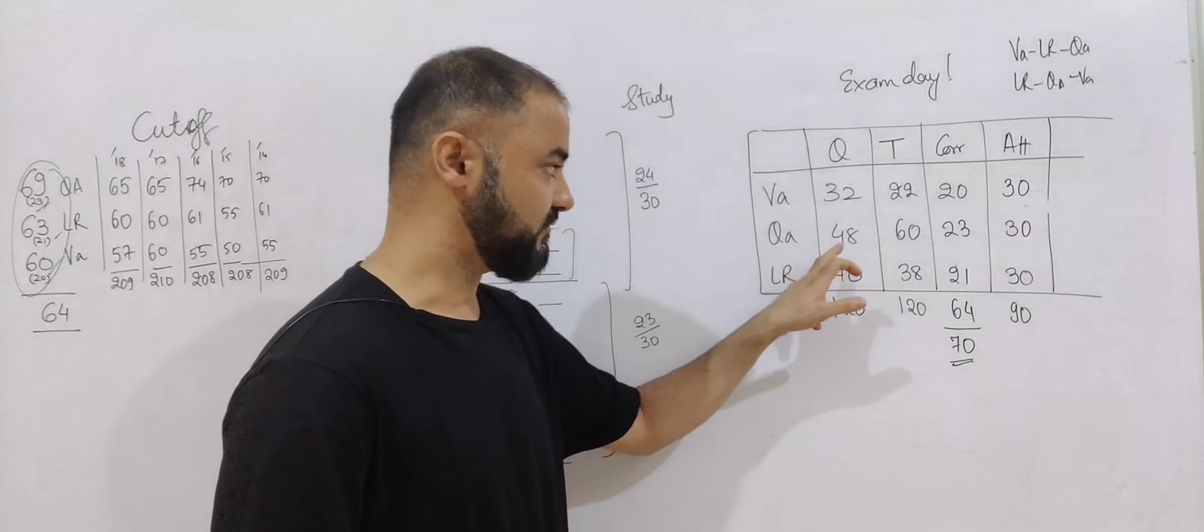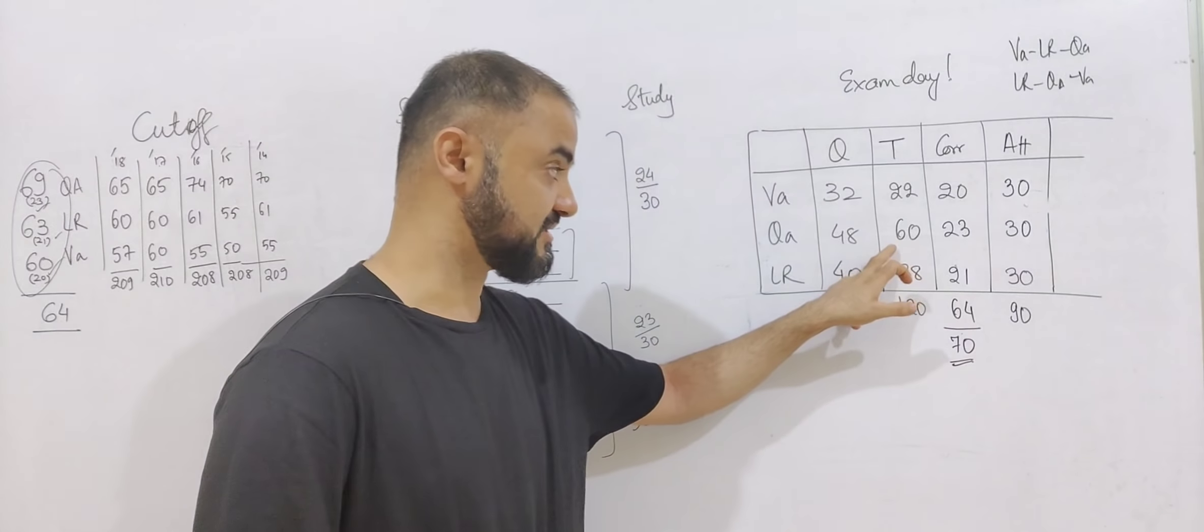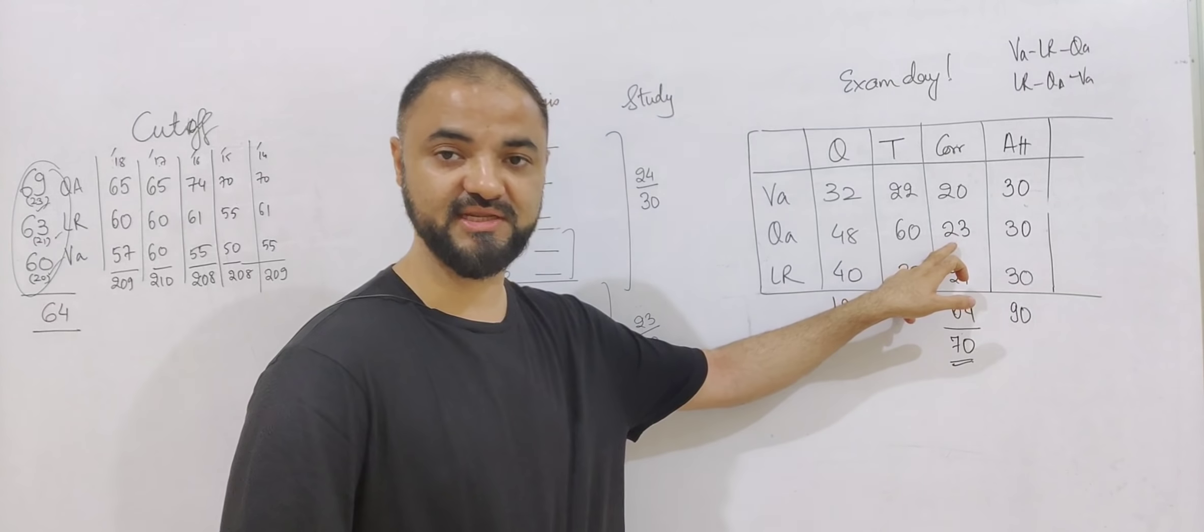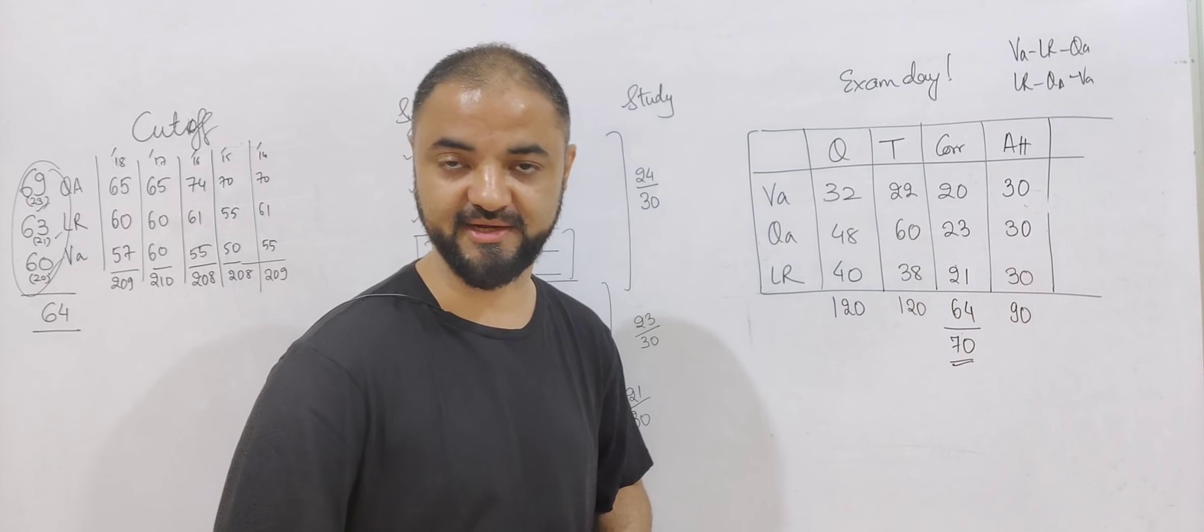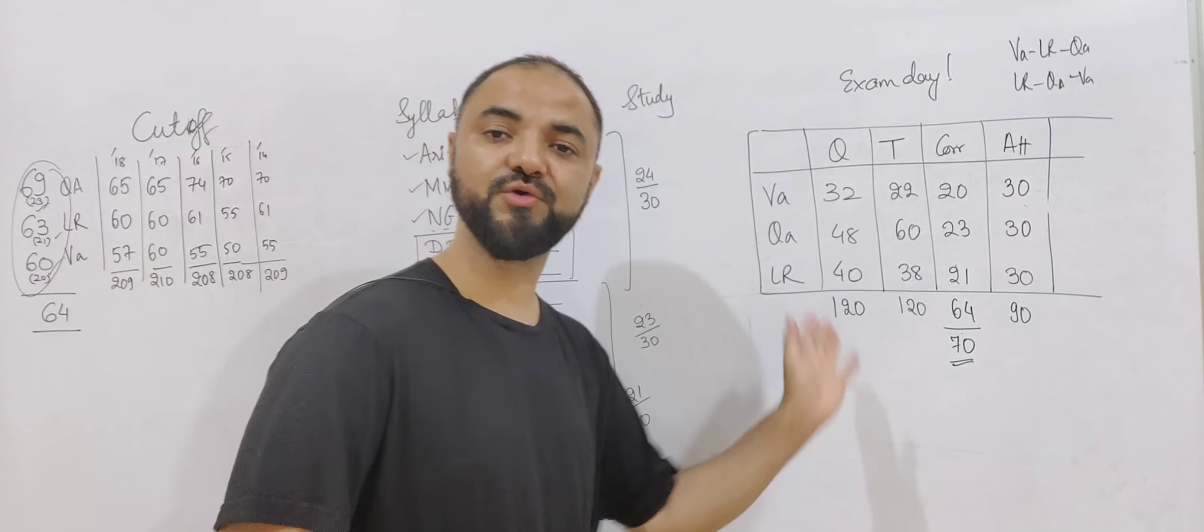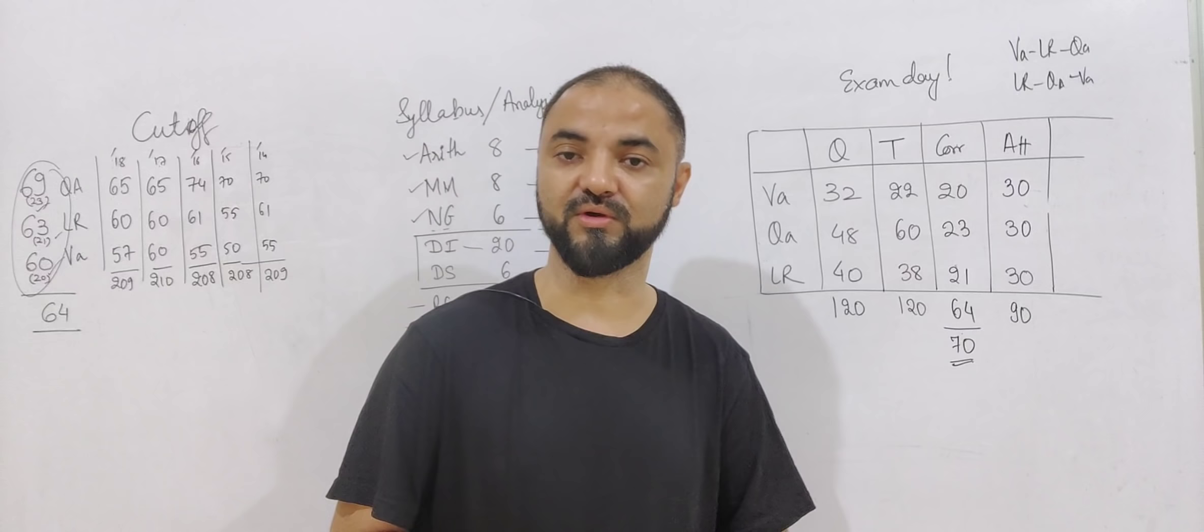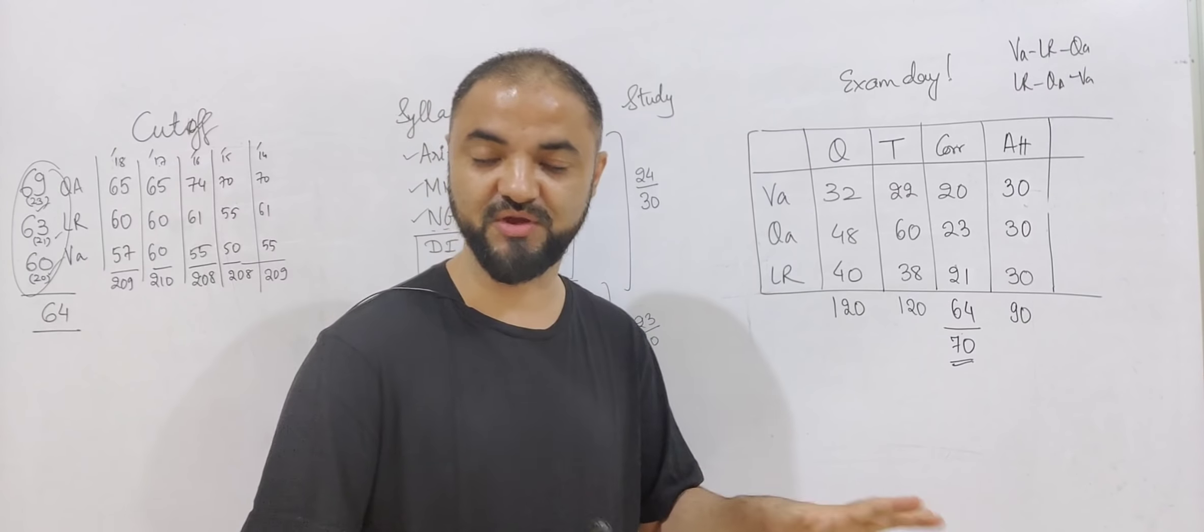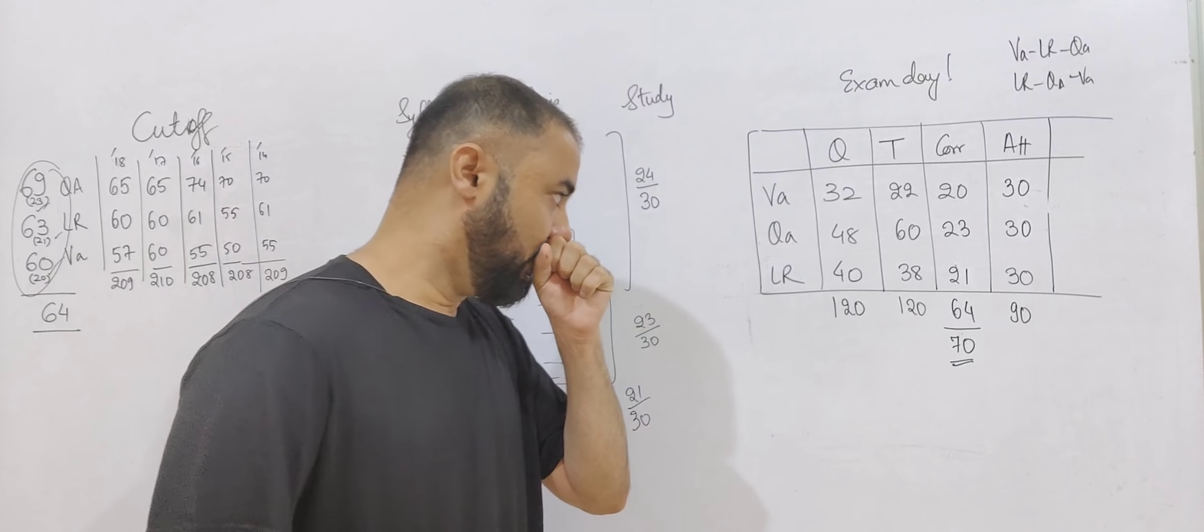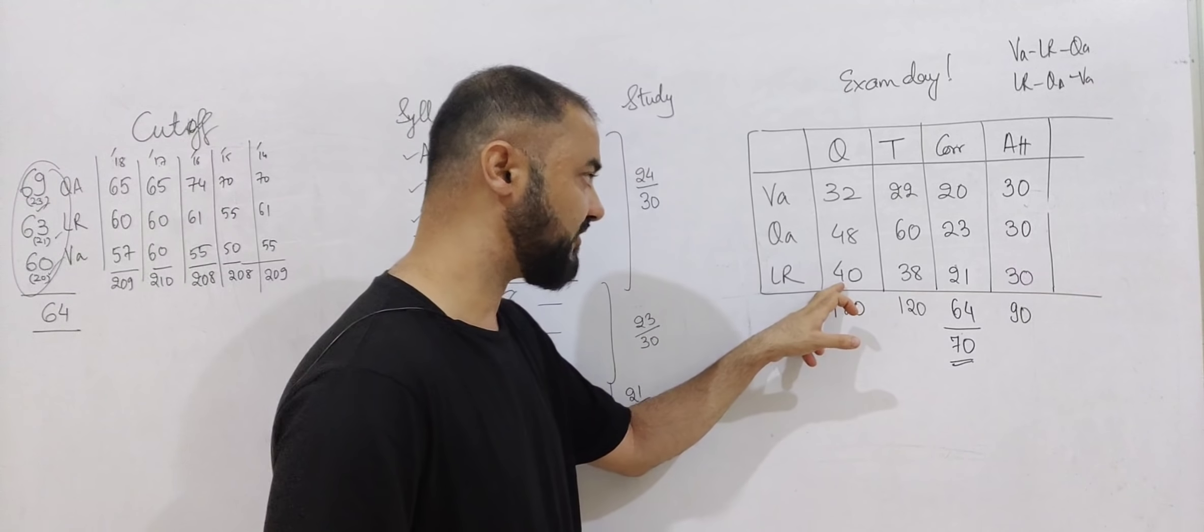Quant: 48 questions total, time is 60 minutes. Correct has to be 23. So for 23 you have to do 30 questions correct minimum. 30 is a minimum hygiene factor you have to maintain. If you want you can increase to 40, you can do more, but 30 is minimum.